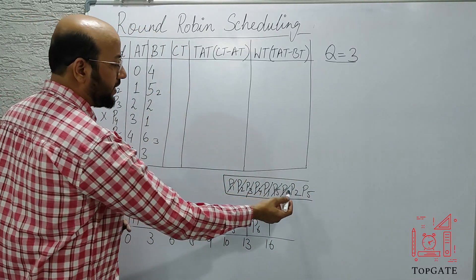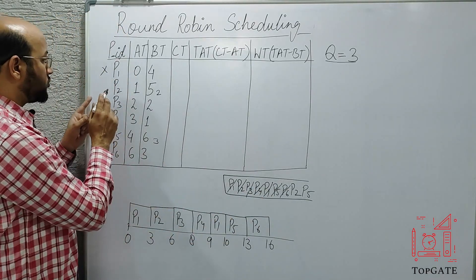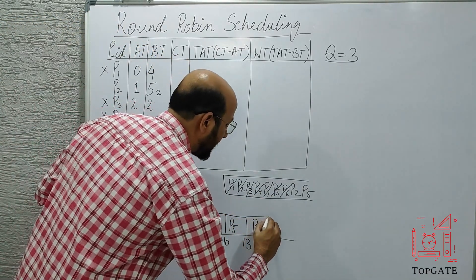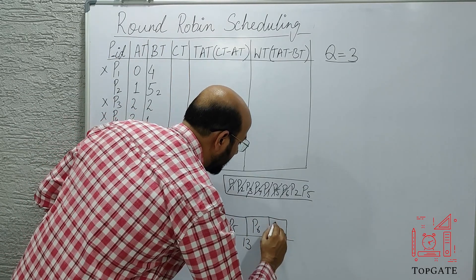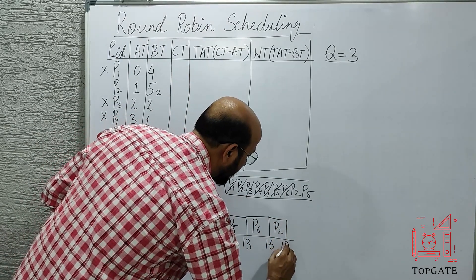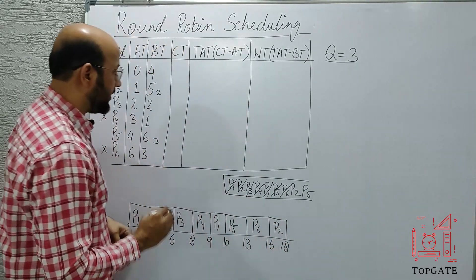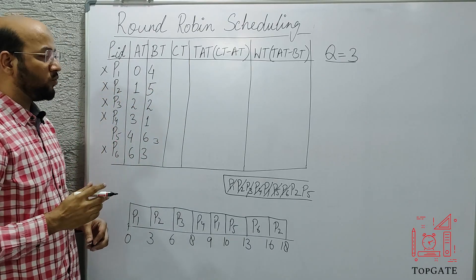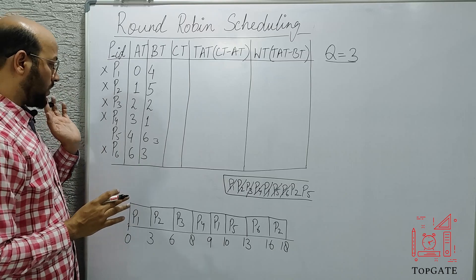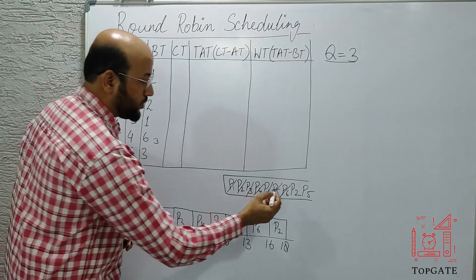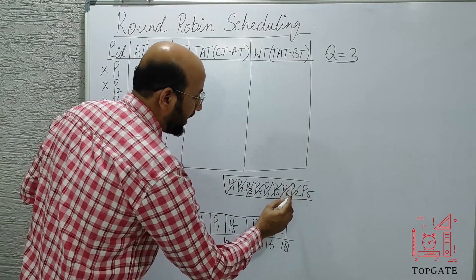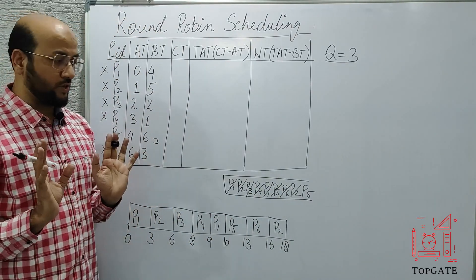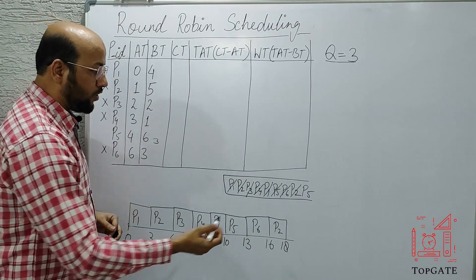Now at the head of the ready queue we have P2. P2's remaining requirement is only two, so it starts at 16 and completes at 18. P2 is again completed, terminated, and goes out of the system. There is no P2 now, so I cut it and don't write it — P2's work is finished.